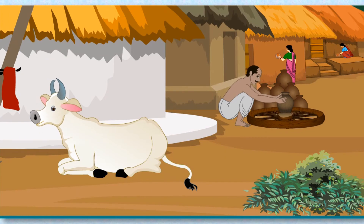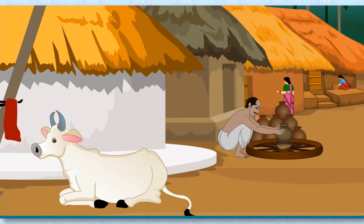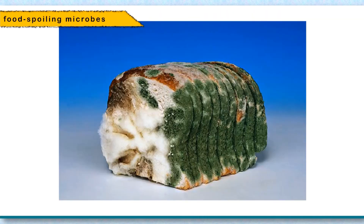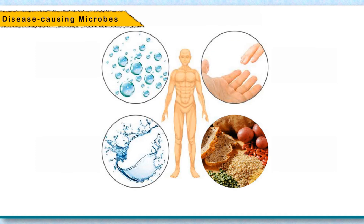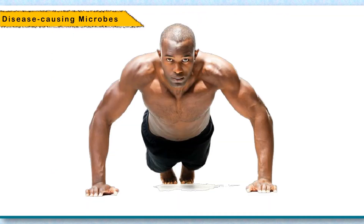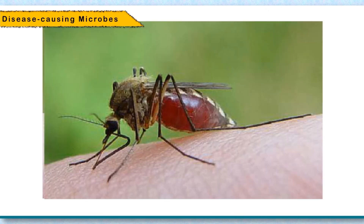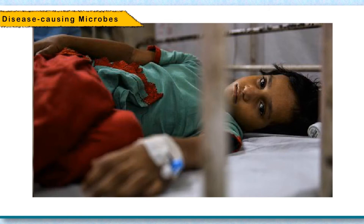Harmful microorganisms: Many microorganisms are harmful to animals, plants, and humans. Microbes which cause disease in other living organisms are known as pathogens. These pathogens are present in air, water, and food. Some diseases can be spread by direct physical contact — these are known as communicable diseases. Other diseases get transmitted from an infected to a healthy person through carriers such as mosquitoes and house flies. For example, malaria and dengue are transmitted by different types of mosquitoes.